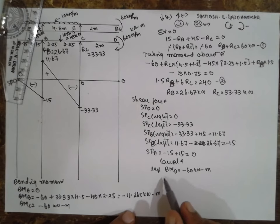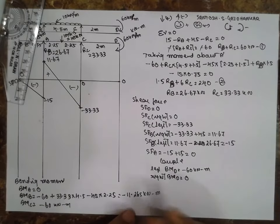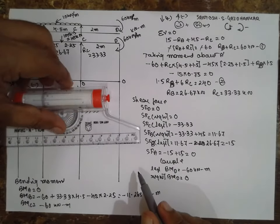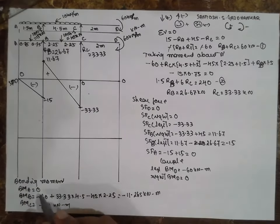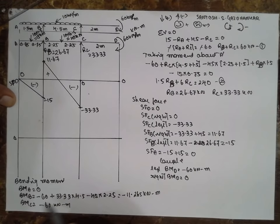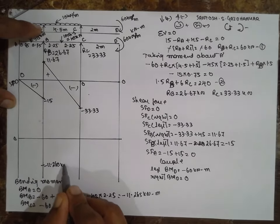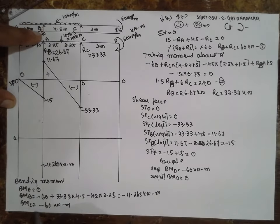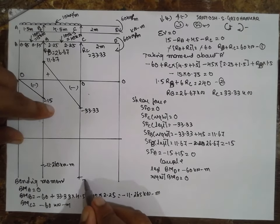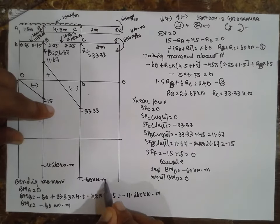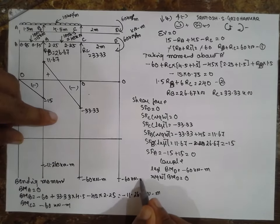On the right side, the bending moment at D will be 0. Now draw the bending moment diagram: first value is 0, second value is minus 11.265 kNm, BM at C is minus 60 kNm, at D it is minus 60 kNm again, then 0.